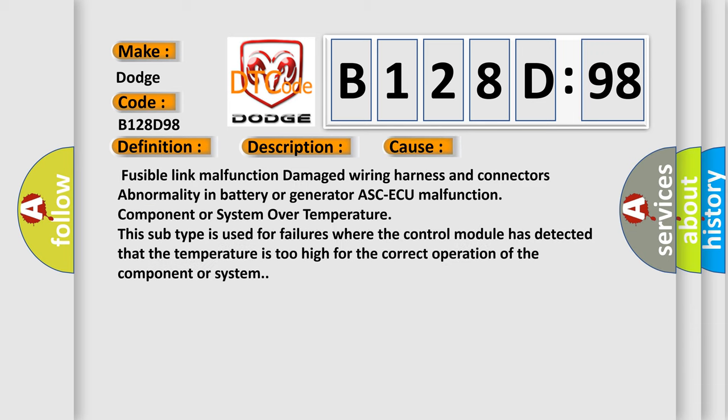Fusible link malfunction, damaged wiring harness and connectors, abnormality in battery or generator, ASCAQ malfunction, component or system over temperature. This subtype is used for failures where the control module has detected that the temperature is too high for the correct operation of the component or system.